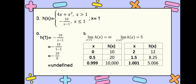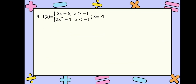From the right, the limit of h of x equals 5 as x approaches 1. Our values of x are 2, 1.5, 1.001, and our values of h of x are 12, 8.25, 5.006. Therefore, our discontinuity is infinite discontinuity.